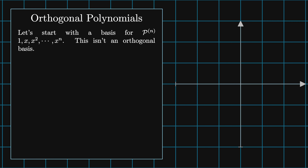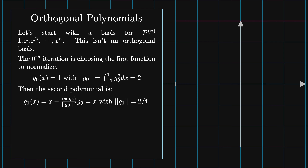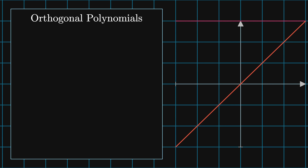This isn't an orthogonal basis because the integral from minus one to one of any even function that isn't the zero function is not equal to zero. The zeroth iteration is choosing the first function to normalize, so g0 of x equals one, where the magnitude of g0 is the integral from minus one to one of g0 squared dx, which equals two. The second polynomial is g1 of x equals x minus the inner product of x with g0 divided by the norm of g0 squared times g0, which ends up equaling x, with the magnitude of g1 equals two-thirds. Then we iterate: gk of x equals x to the k minus the sum from j equals zero to k minus one of the inner product of x to the k with gj divided by the norm of gj squared times gj.